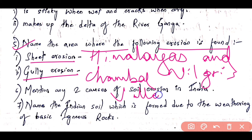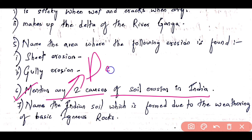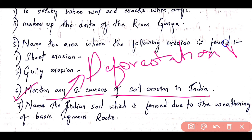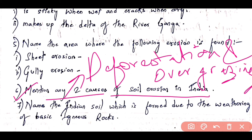Question 6: Mention any two causes of soil erosion in India. The first cause is deforestation, and the second cause is overgrazing. So you can write deforestation and overgrazing as the two causes of soil erosion in India.